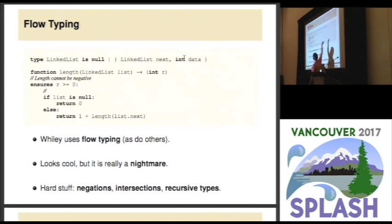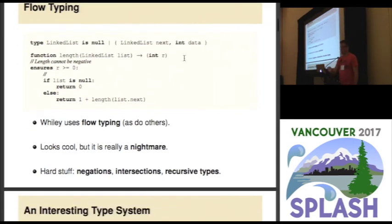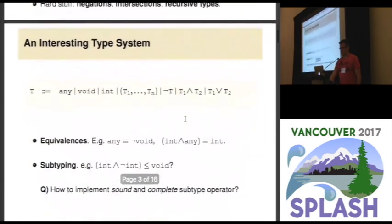So the type of list in the true branch is going to be brackets null or record, intersected with null. That's the actual type of list. And we can see, hopefully immediately, that we can simplify that to null. And likewise, on the false branch, what we're going to do is we're going to take the type of list, which is null or record, and then we're going to subtract the type we're testing against, which is null. In fact, I don't have a subtract. What I have is a negation operator. So what I do for subtraction is I take the thing and I intersect it with the negation.